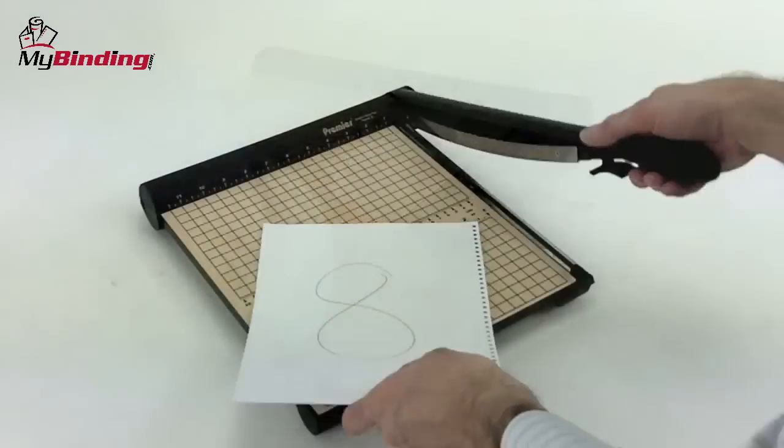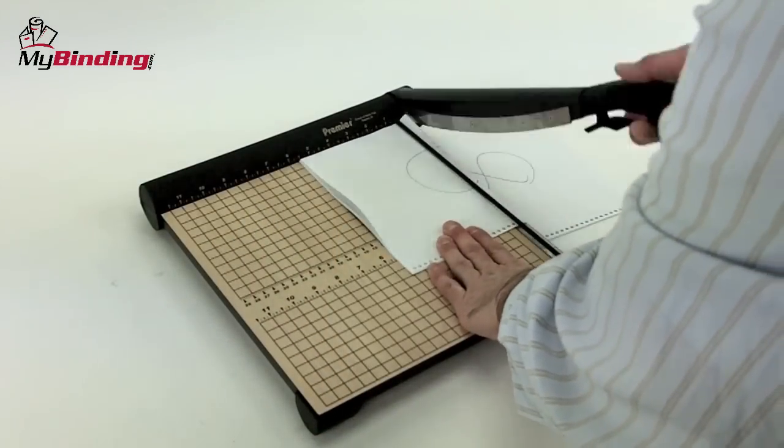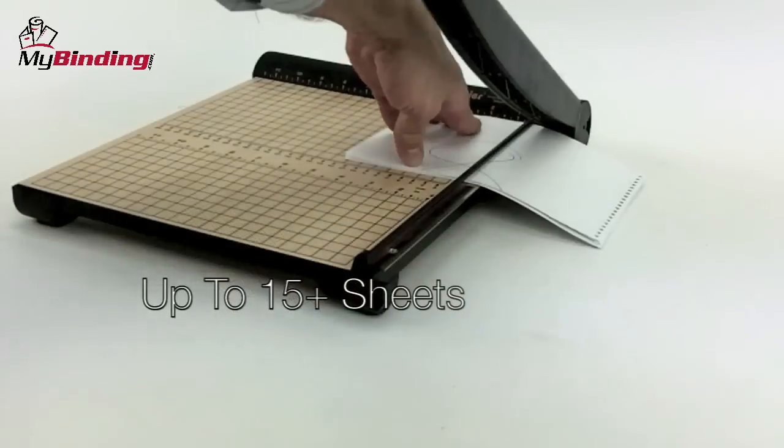The T12 can cut up to 15 sheets of 20-pound paper per trim. Here's eight, and doubling that up to 16, no problem.